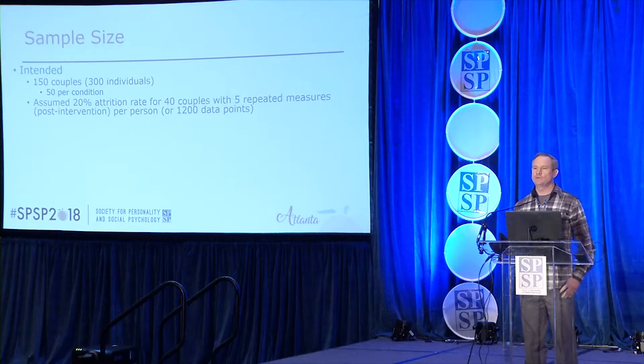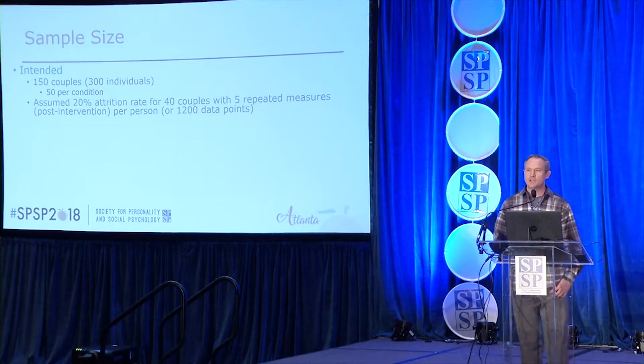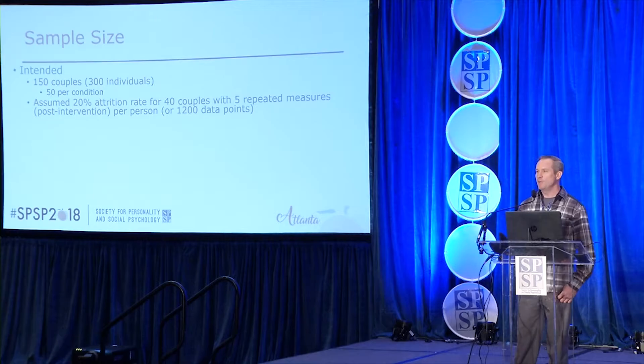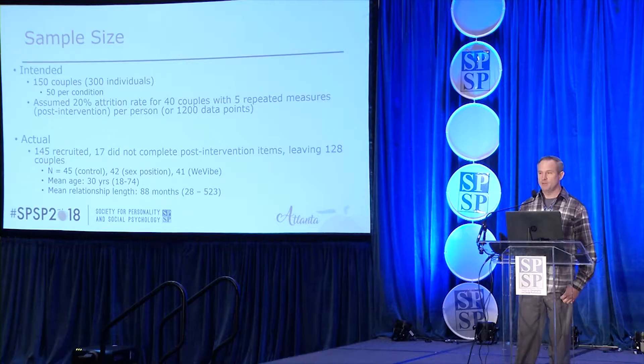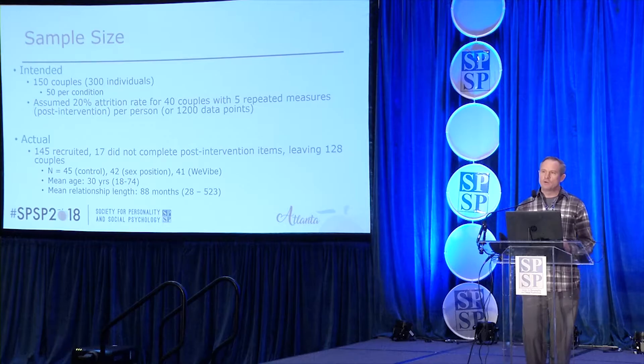We targeted a sample size of 150 couples—300 individuals, 50 per condition—allowing for attrition so we'd have at least 40 couples per condition, and we didn't want to stop until we'd reached that minimum. What we actually ended up with was 145 couples recruited, of which 17 did not complete post-intervention items, giving us 128 couples—still meeting our minimum of 40 couples per condition.